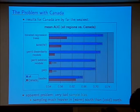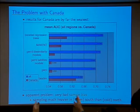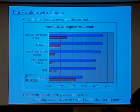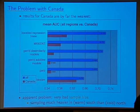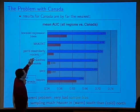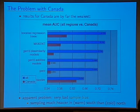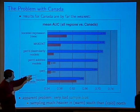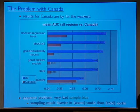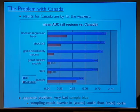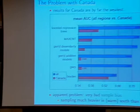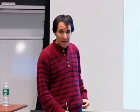One thing that came out of this work is the problem of Canada. The results for Canada were by far the weakest. In blue is the average of all regions; in magenta is the average of just Canadian species. The Canadian results for all methods except Bioclim took a huge hit. The problem seems to be sample bias — in Canada, people tend to sample in the south where it's warmer and there are cities, rather than the freezing cold north. So we can modify MaxEnt to handle sample bias.